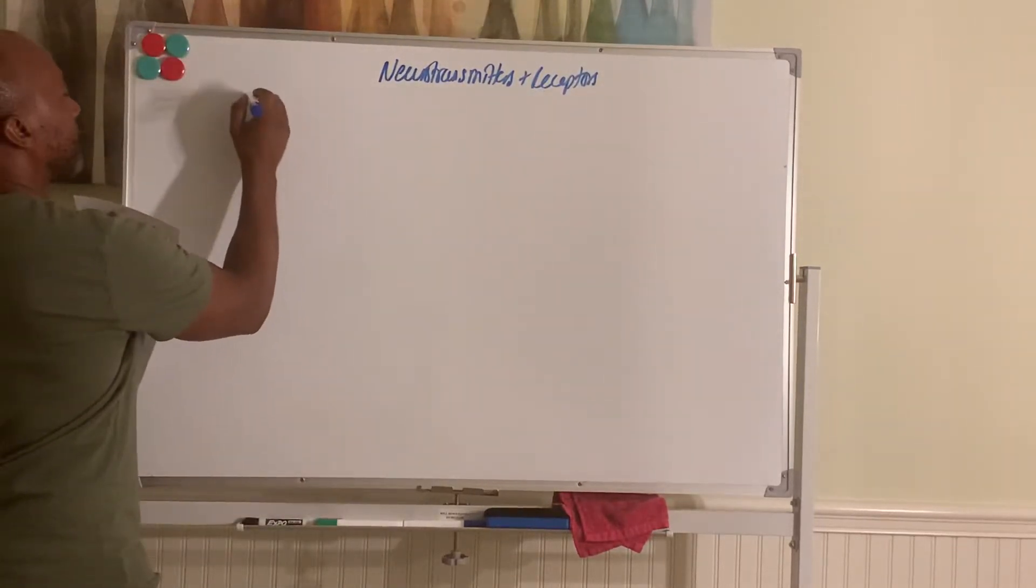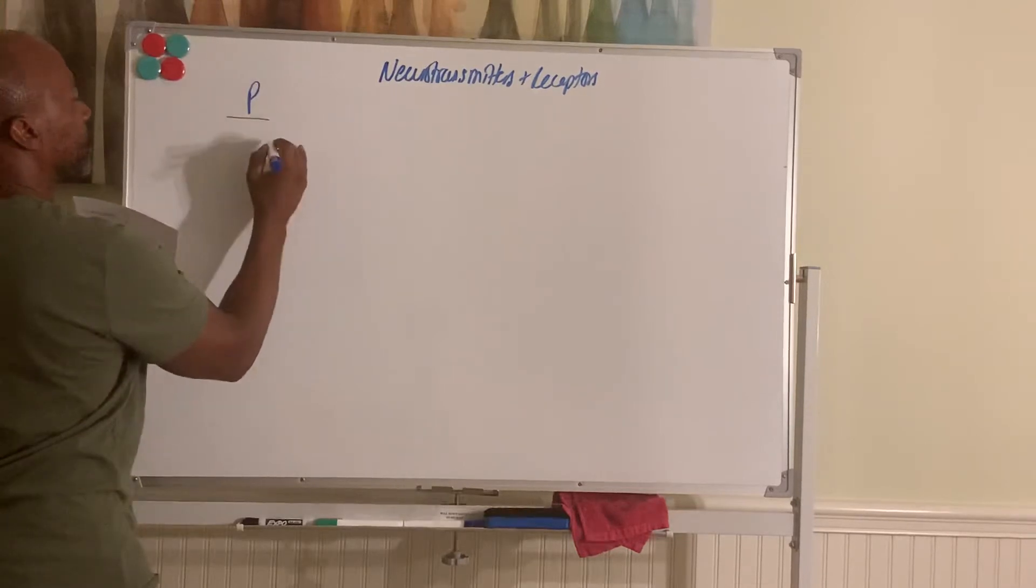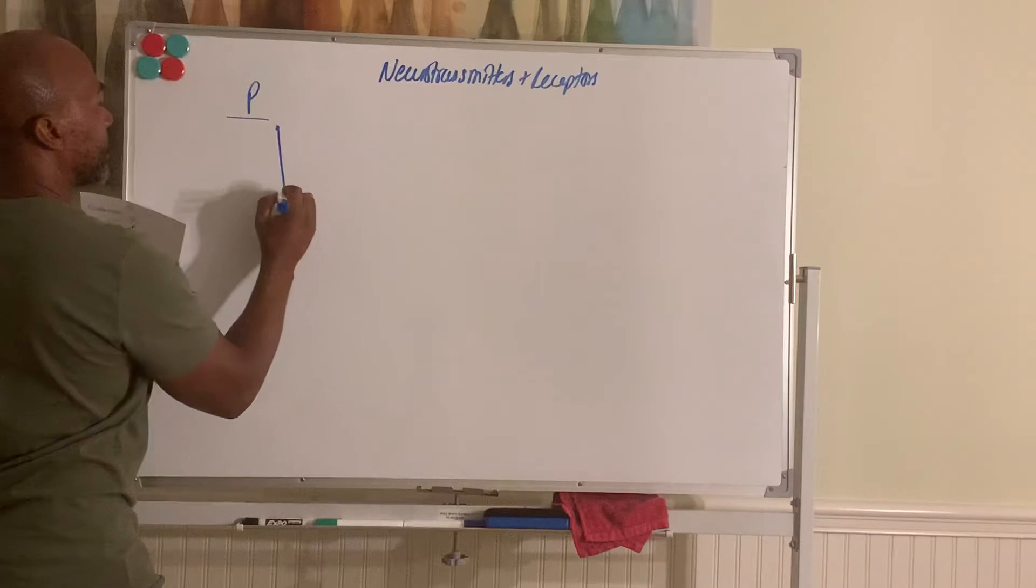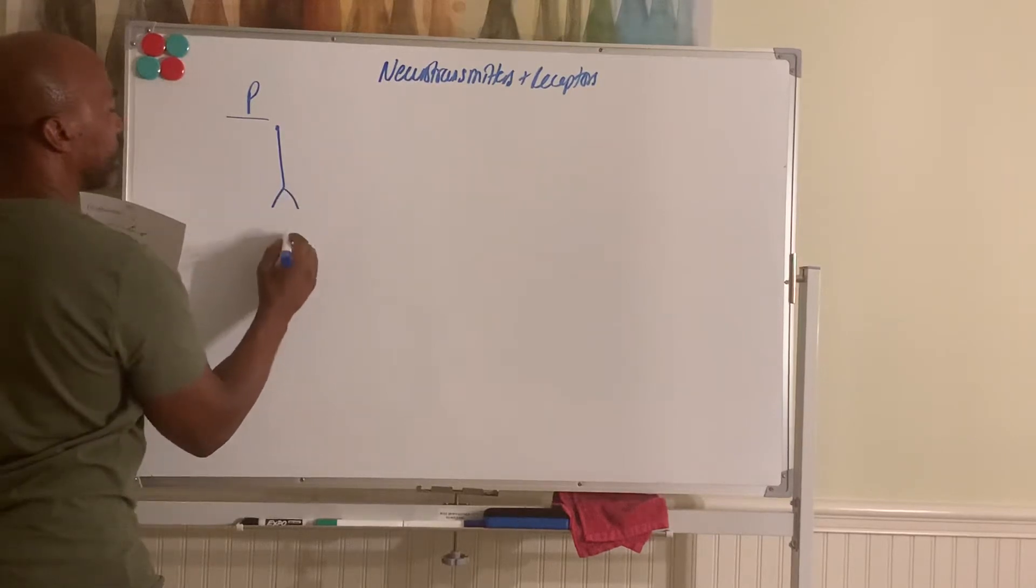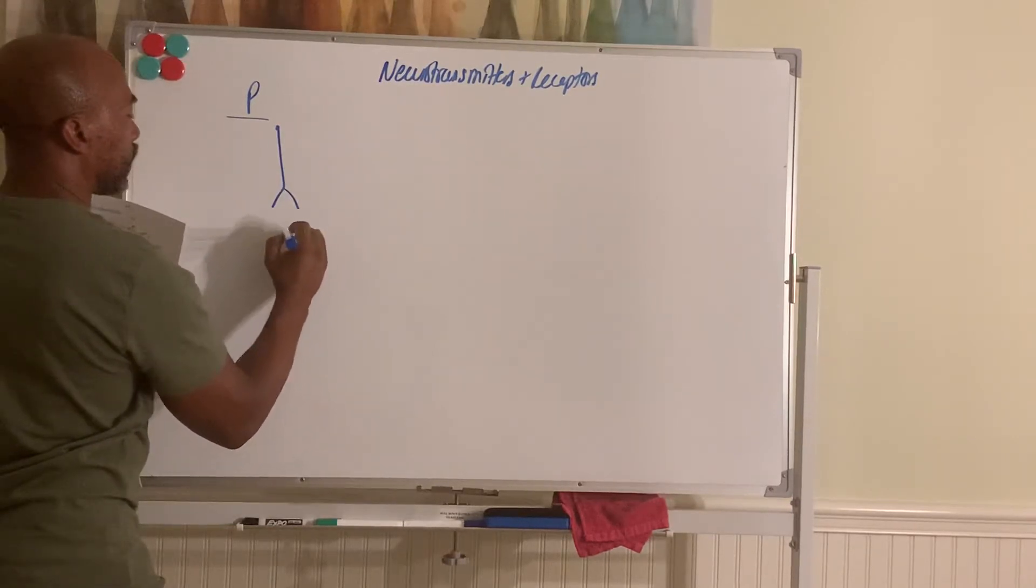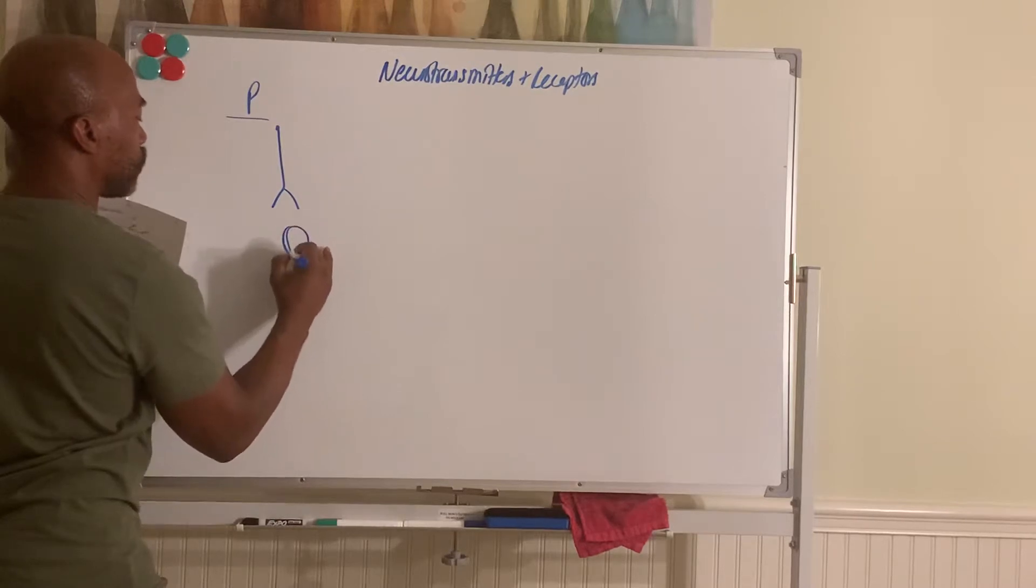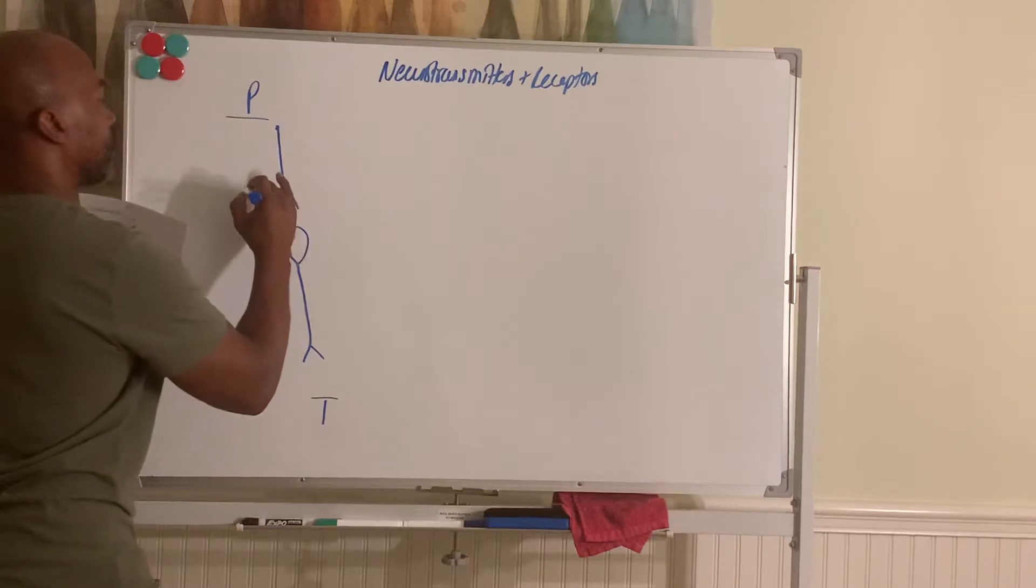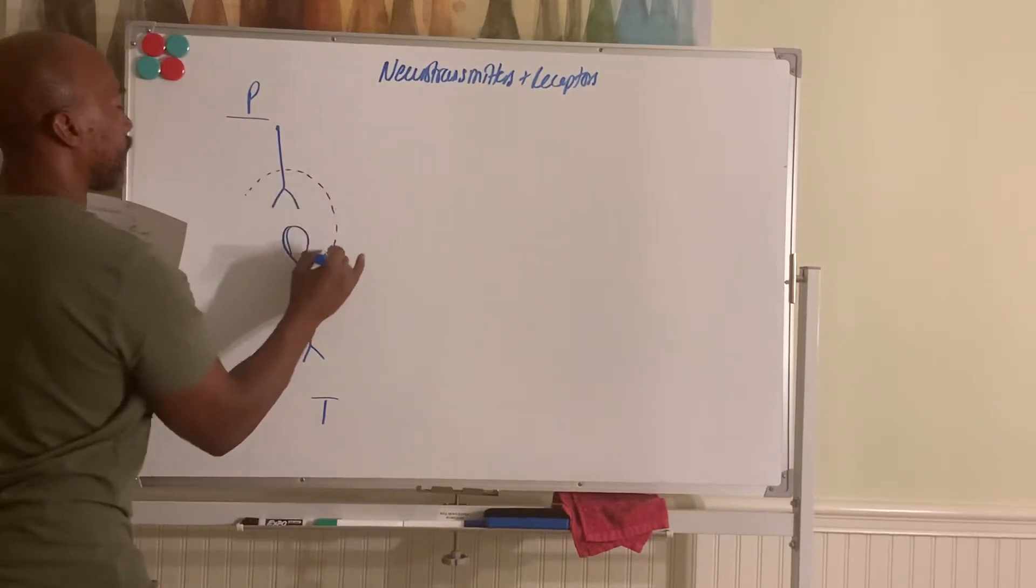Now let's say this is the parasympathetic division. So you have the first neuron, the pre-neuron comes in, synapses with a second, with the post-neuron, which then goes to its target. So this is your autonomic ganglia here.